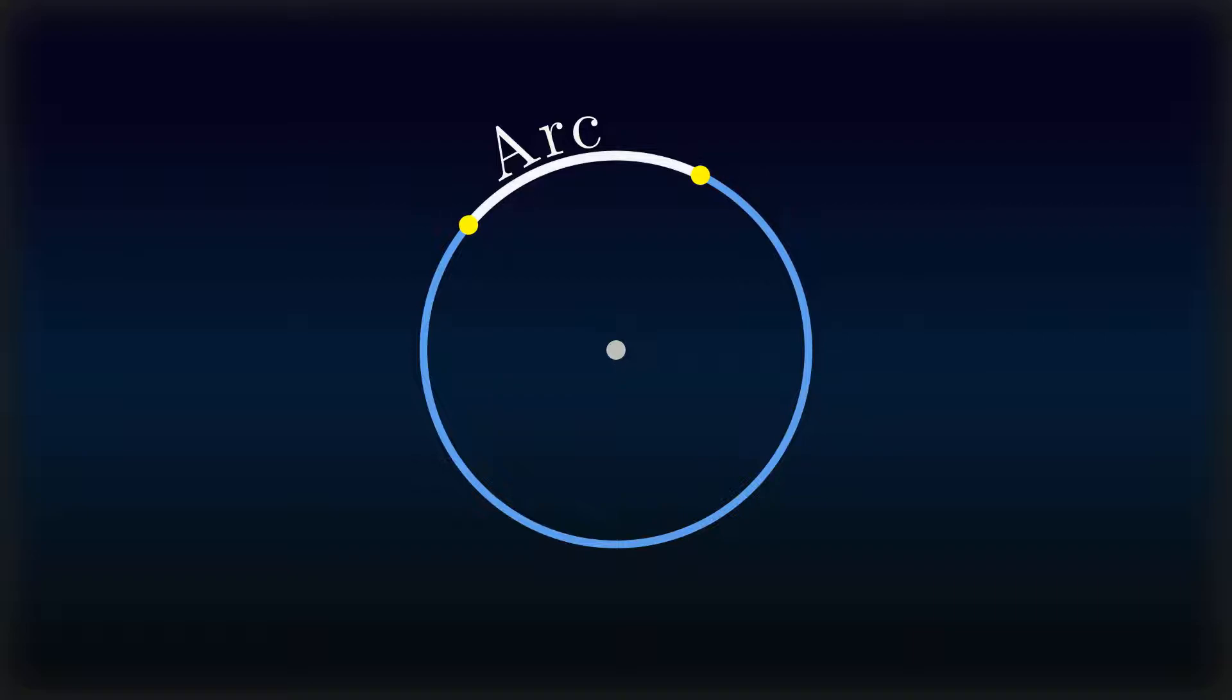Specifying two endpoints of an arc and a center allows for two arcs that together make up a full circle.